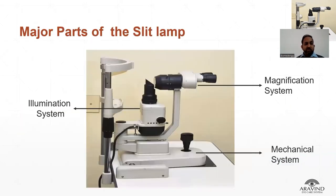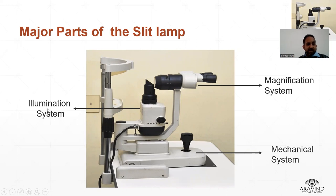Now let's move on to the parts of the slit lamp. Slit lamps basically have three parts, as shown in this figure: the illumination system, magnification system, and mechanical system.